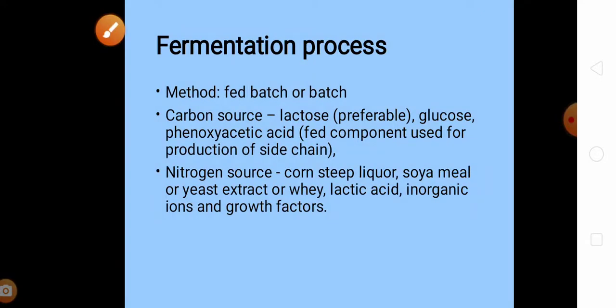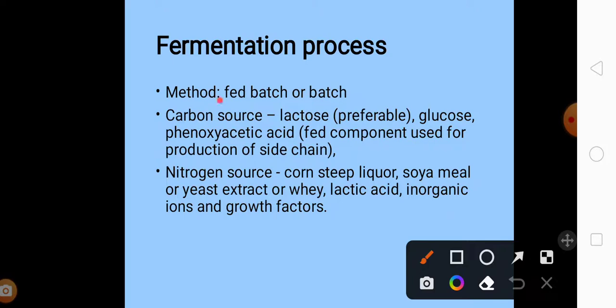Next we move on to the fermentation process requirements for penicillin production. The method that is used is either fed batch or batch fermentation. The medium that is used for the production of penicillin consists of carbon sources and nitrogen sources. The carbon sources include lactose, which is the most preferred one, and glucose. Phenoxy acetic acid is the component that is used for the production of side chain. The variety of penicillin consists of variety side chains, so according to it the component will be added.